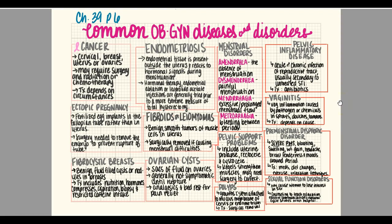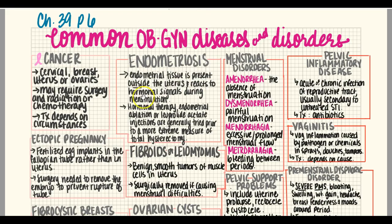The last section covers common OB-GYN diseases and disorders. Starting with cancer — there is cervical cancer, breast cancer (which occurs in men and women), and cancers exclusive to women such as uterine and ovarian cancer. Cancers may require surgery, radiation, or chemotherapy, and the treatment always depends on the circumstances, stage, and underlying conditions. No single treatment plan fits every individual.